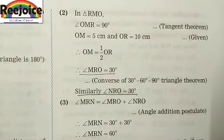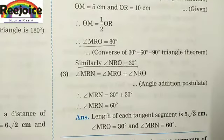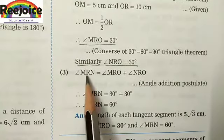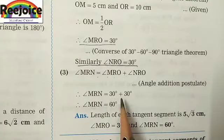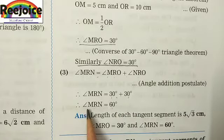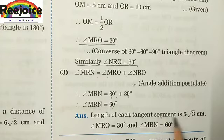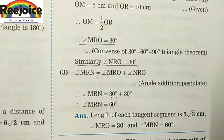For question (3), angle MRN equals angle MRO plus angle NRO, which is 30 + 30 = 60 degrees. Therefore angle MRN is equal to 60 degrees. Final answers for Question 2: length of each tangent is 5√3 cm, angle MRO is equal to 30 degrees, and angle MRN is equal to 60 degrees.